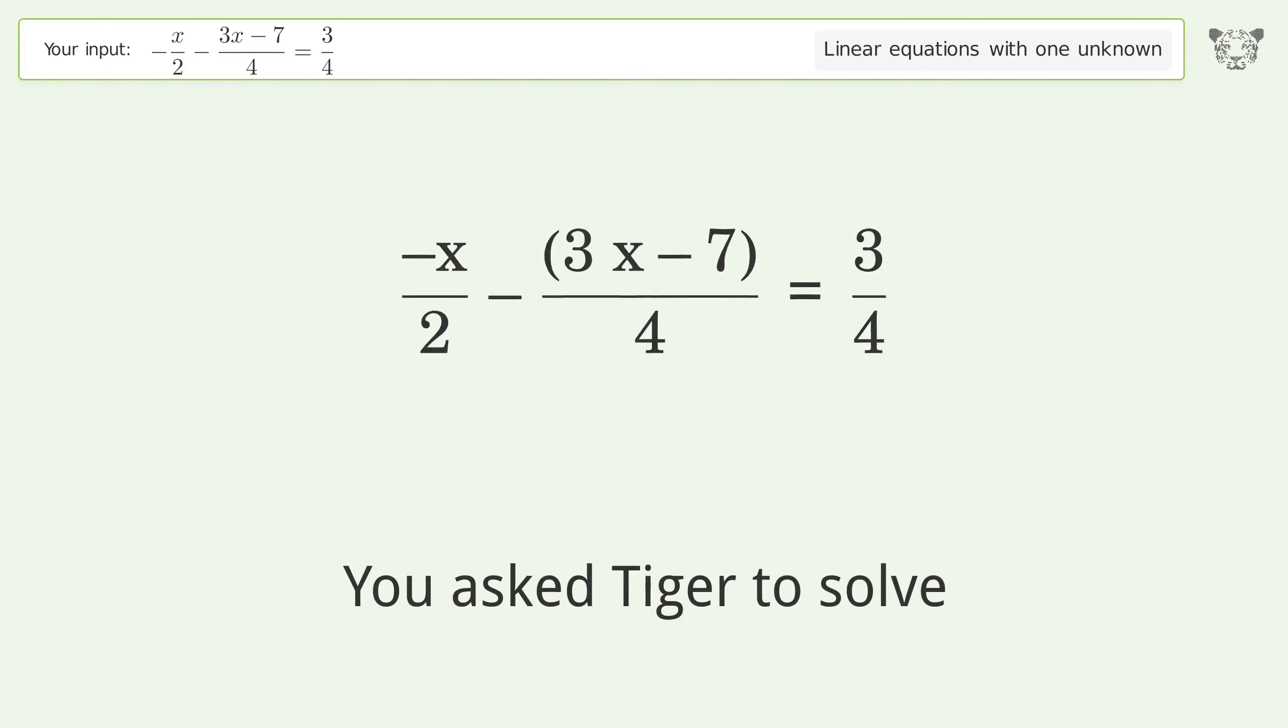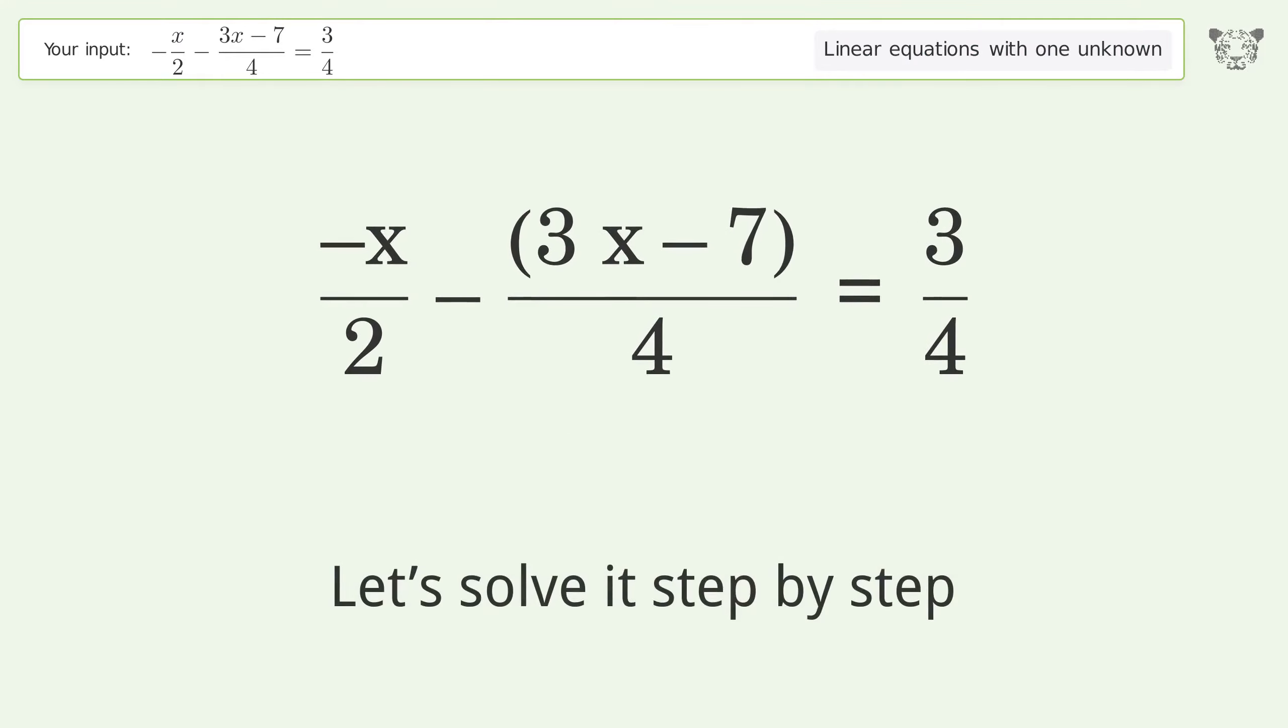You asked Tiger to solve this problem which deals with linear equations with one unknown. The final result is x equals 4 over 5. Let's solve it step by step. Simplify the expression.